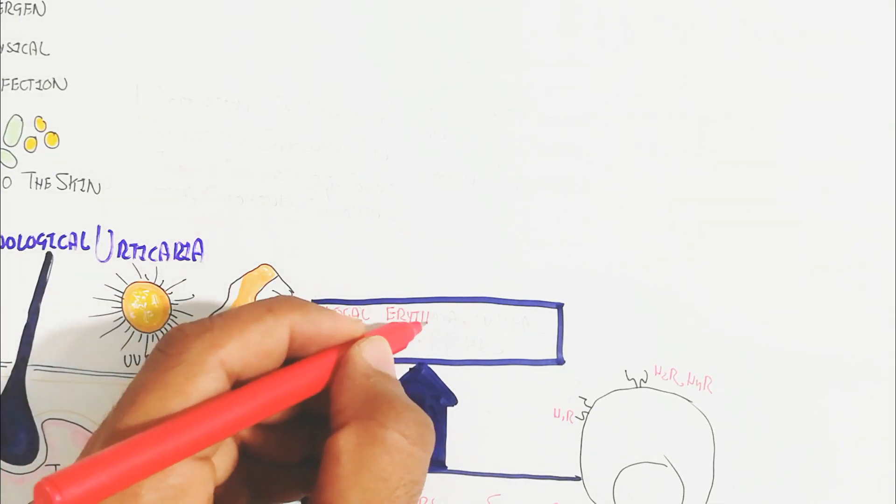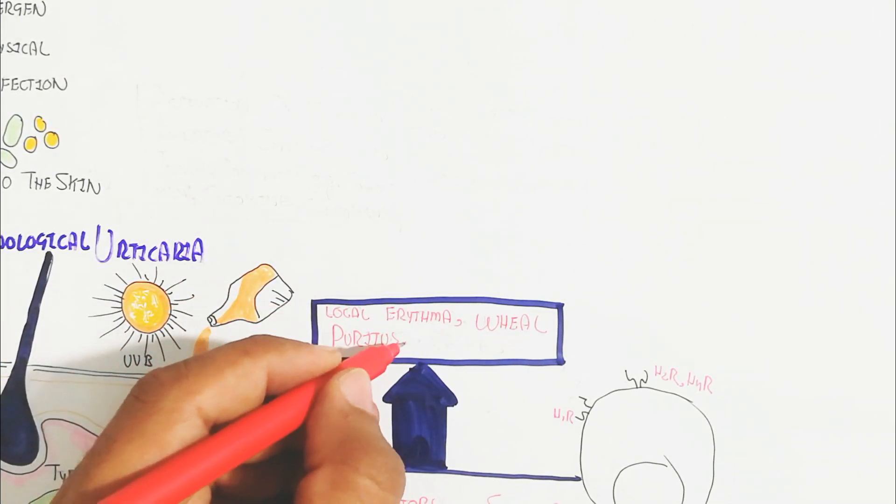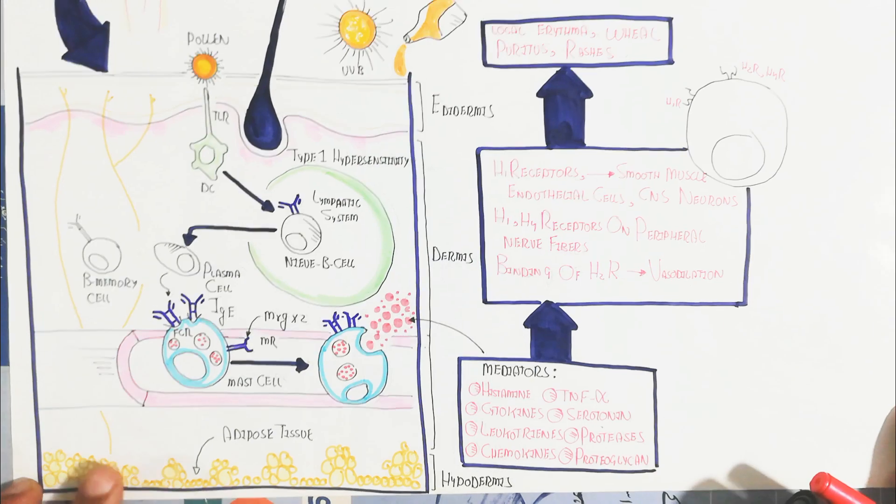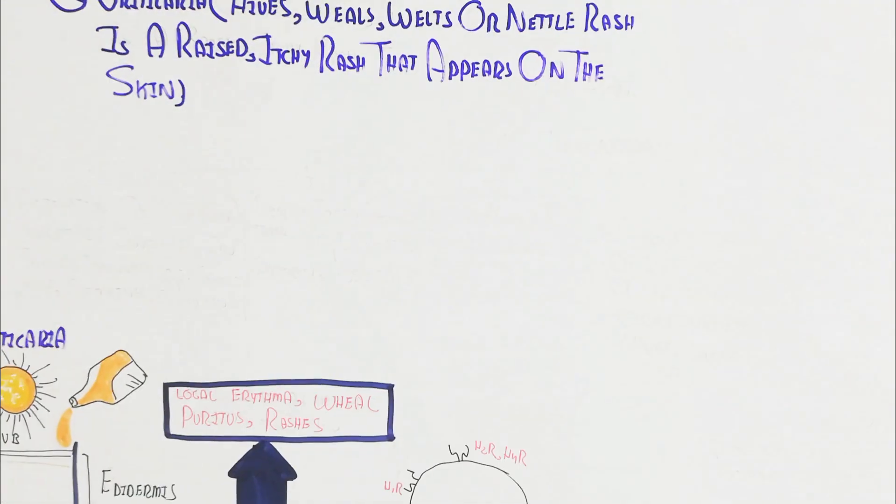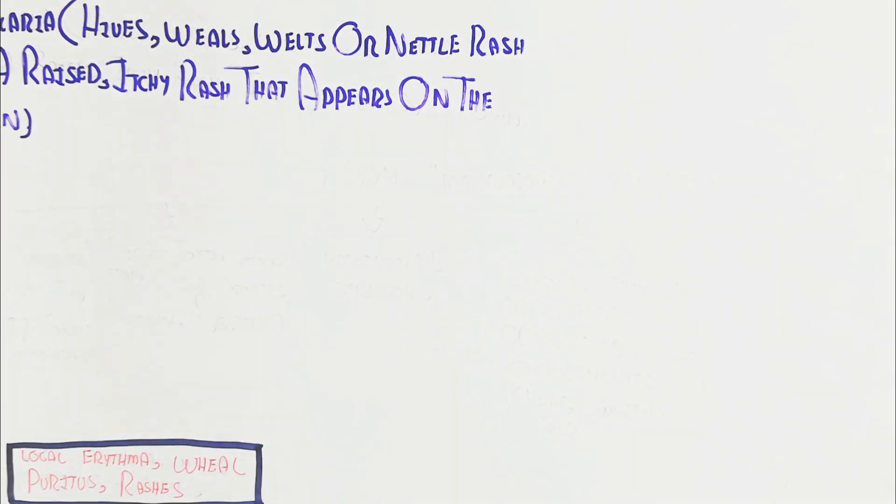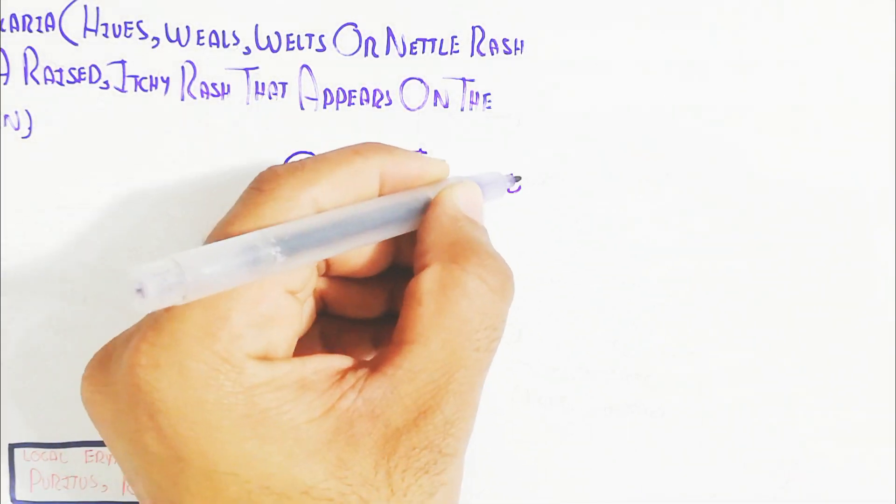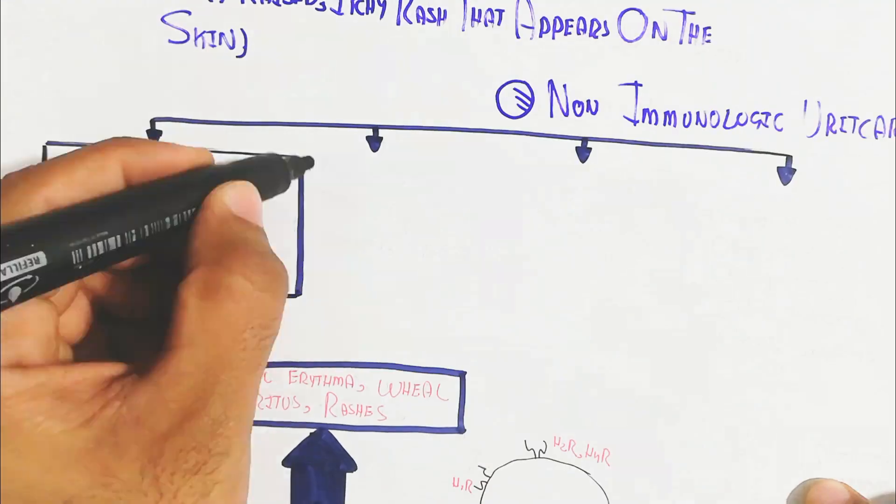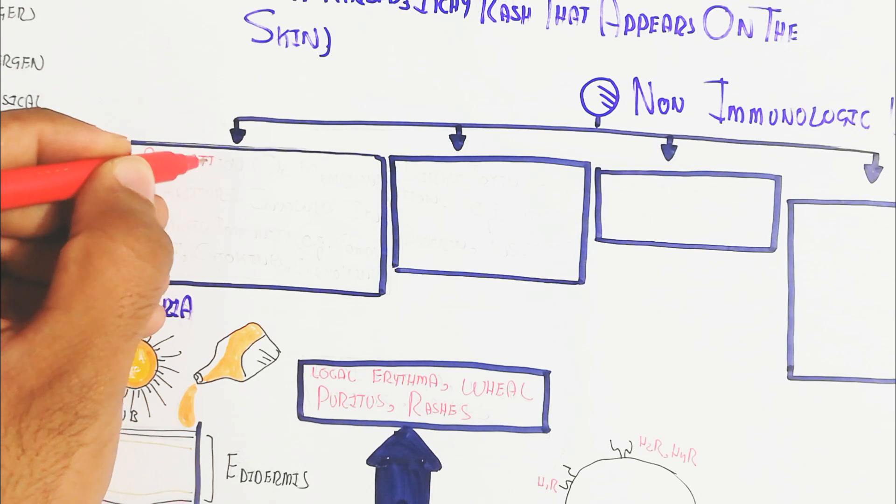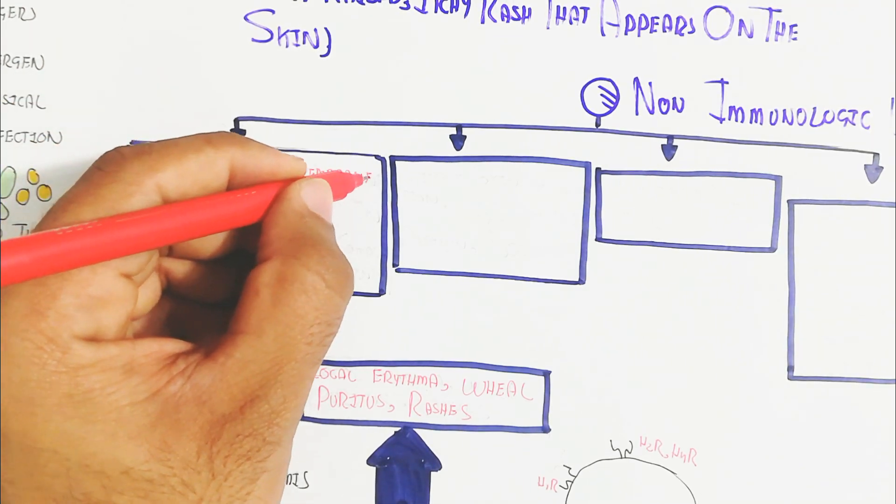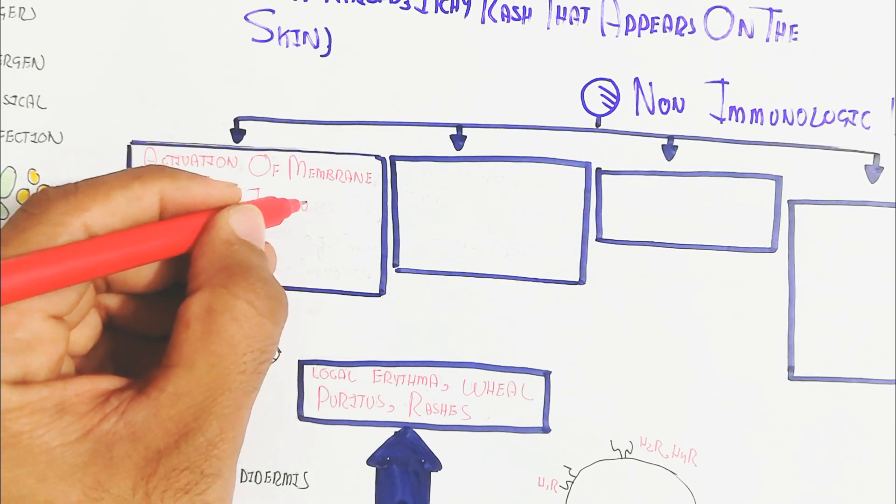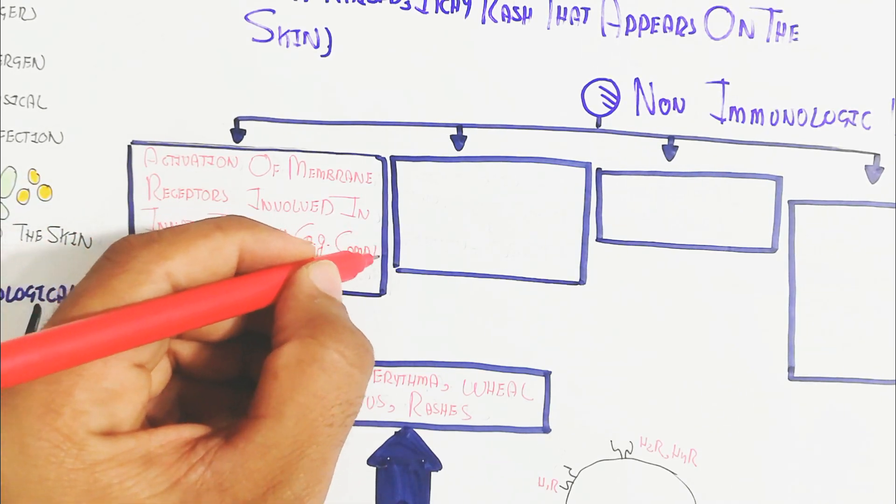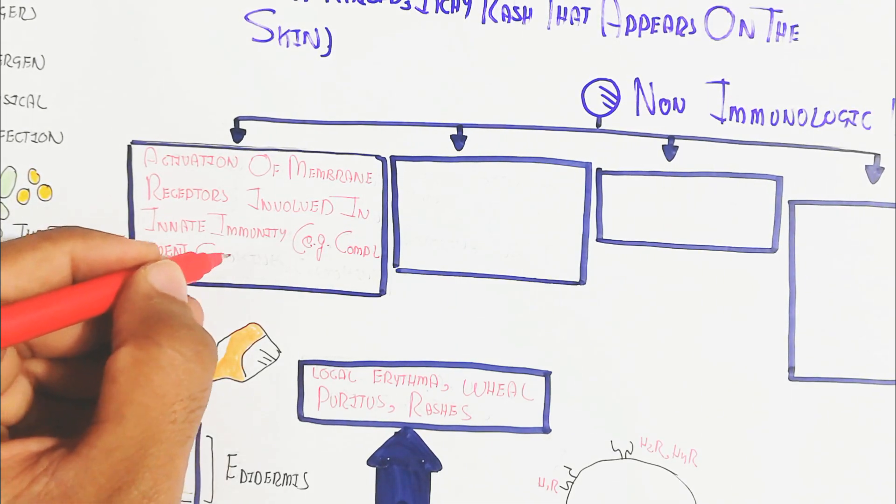This is the immunological urticaria. Now let's understand the non-immunological urticaria. We will not go into detail but understand it shortly. The activation of membrane receptors involved in innate immunity - examples are the complement, cytokines, and chemokines.